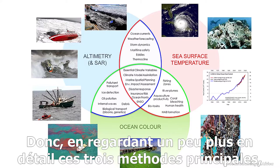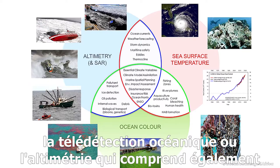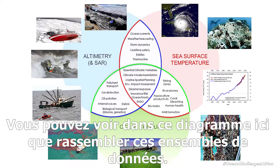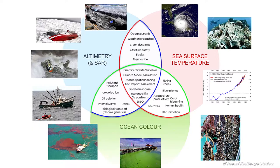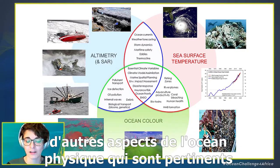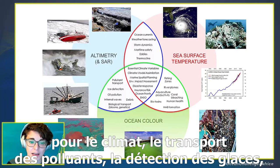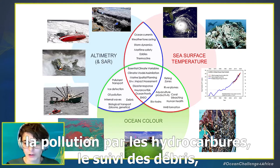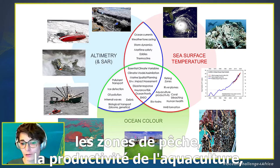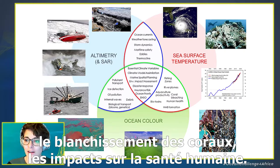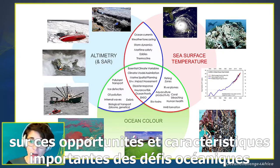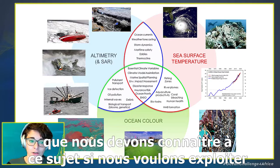Bringing together three main ocean remote sensing methods — altimetry including SAR, sea surface temperature, and ocean color — you can explore many different ocean-relevant topics: ocean currents and maritime safety, storm dynamics, physical oceanography for climate, transport of pollutants, ice detection, oil pollution, debris tracking, harmful algal blooms, links between ocean ecosystems, fishing zones, aquaculture productivity, coral bleaching, and impacts on human health.